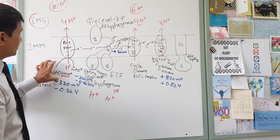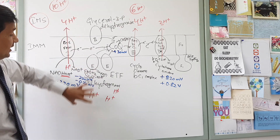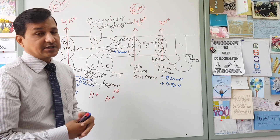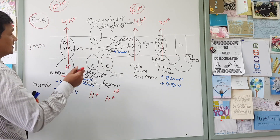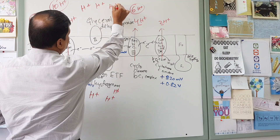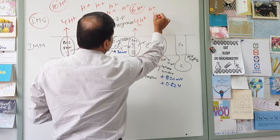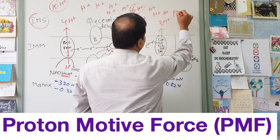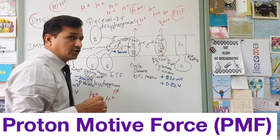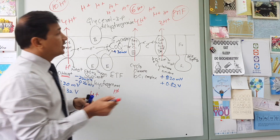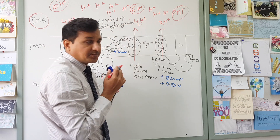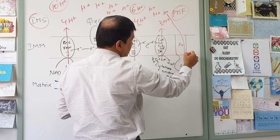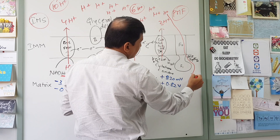NADH plus H+ oxidation pumps 10 protons from the matrix into the intermembrane space, while FADH2 oxidation pumps 6 protons. As oxidation continues, more and more protons accumulate in the intermembrane space, creating a gradient and a proton motive force. This proton motive force drives the protons back into the matrix through the ATP synthase F0 subunit, which has a pore for protons.